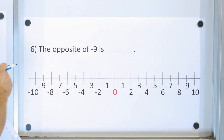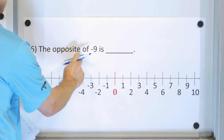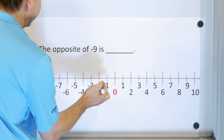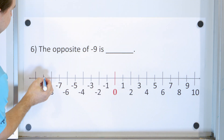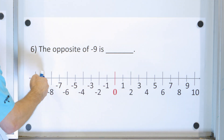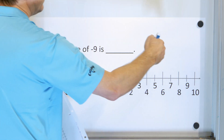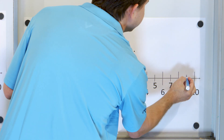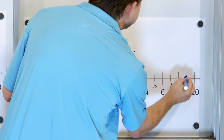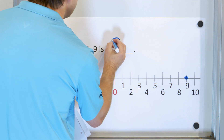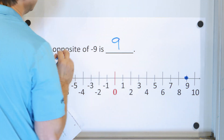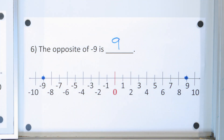The opposite of negative nine: negative nine is right here, and the opposite would be the same distance on the other side, which is positive nine. So the opposite of negative nine is positive nine.